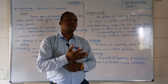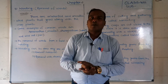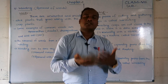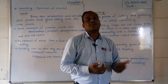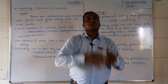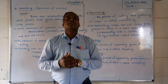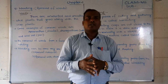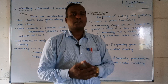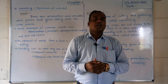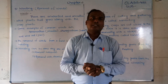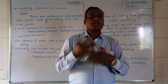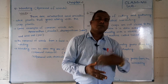In the last video you studied about irrigation. Irrigation is generally done by two methods — one is the traditional method and another is the modern method. In the modern methods, water is not wasted. There are two systems: one is the sprinkler system and another is the drip system.